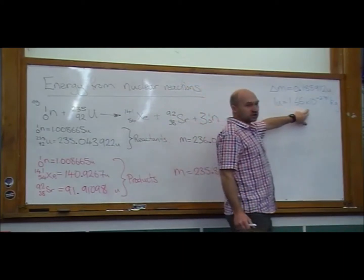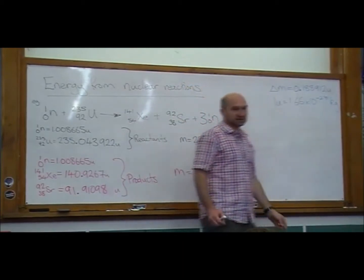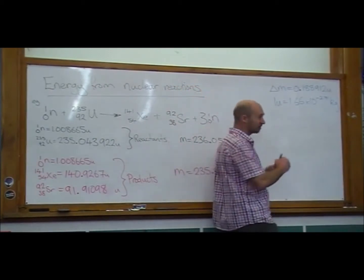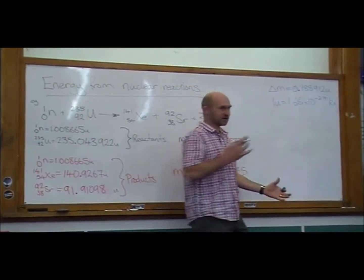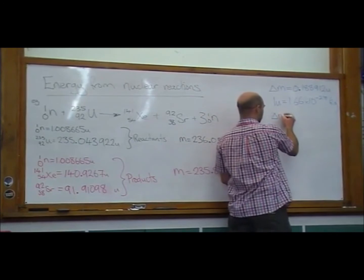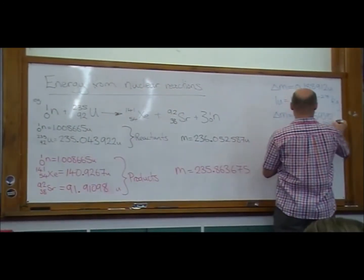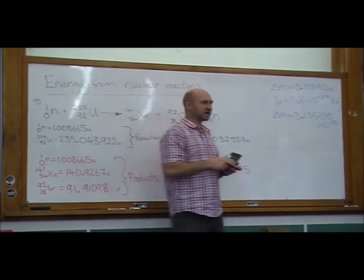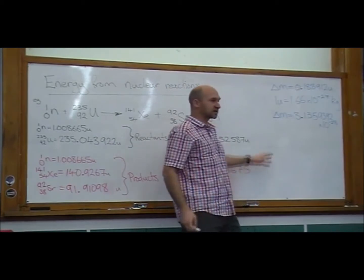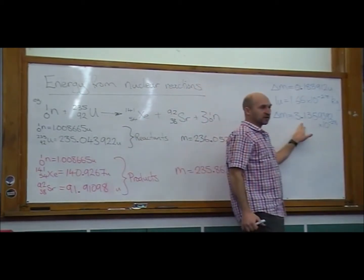So one U, one atomic mass unit, is 1.66 times 10 to the negative 27 kilograms. That means that our mass deficit is... And so we end up with a really small number, like 3 times 10 to the power of negative 28.